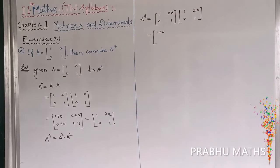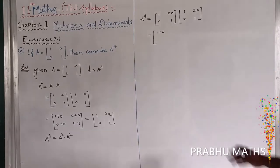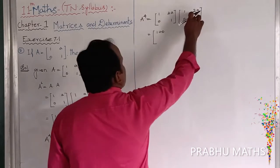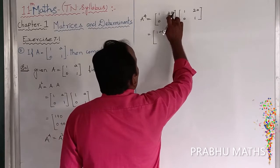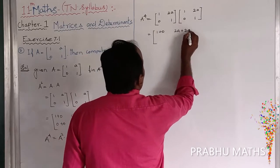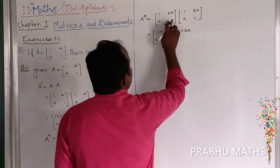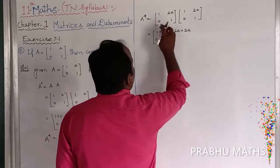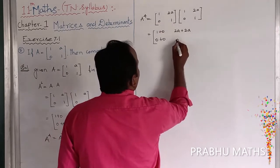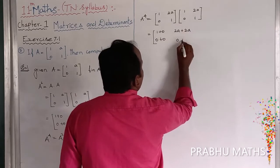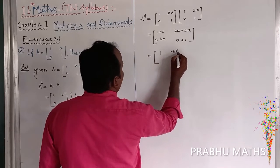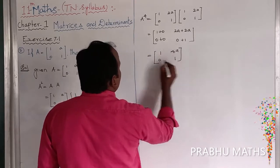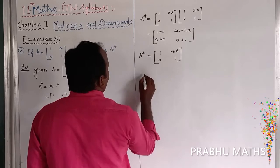So computing A power 4: first row first column is 1 into 1 plus 2a into 0 equals 1. First row second column is 1 into 2a plus 2a into 1 equals 4a. Second row: 0 into 2a is 0, and 1 into 1 plus 1 gives 1. So A power 4 equals [[1, 4a], [0, 1]]. That is the answer.